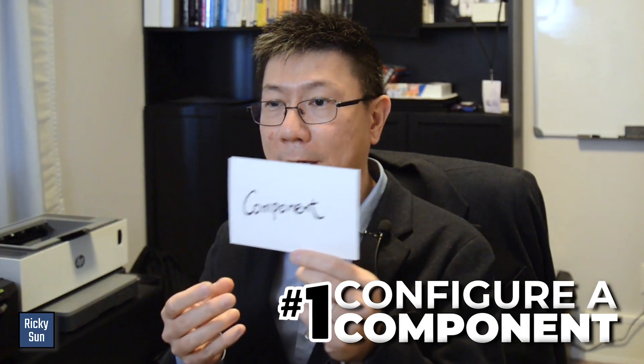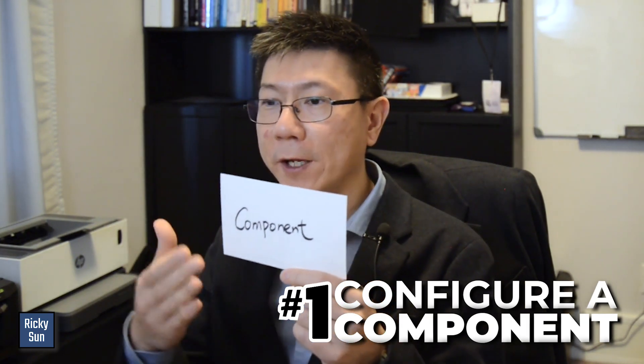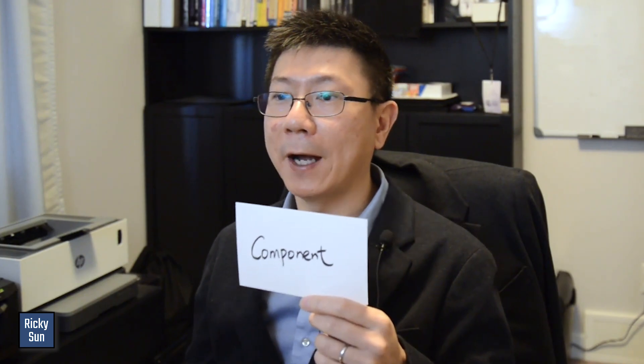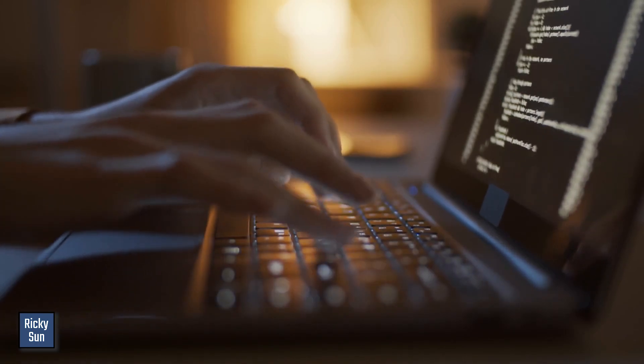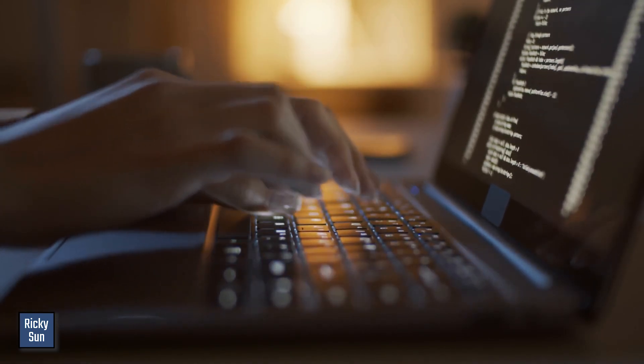There are a couple of steps to do it. The first step is to configure a component — create a component inside the PI adapters. Creating a component is like creating a PI interface instance, except in the adapter you create a component. You give it a name and specify the type. If it is an RDBMS PI adapter, then it is RDBMS type with a name of the component. That's the very first step.